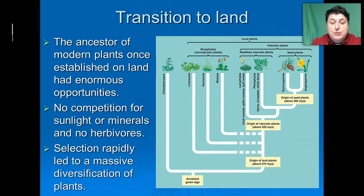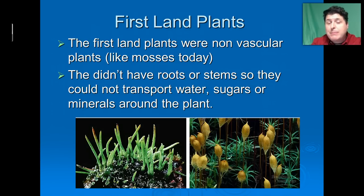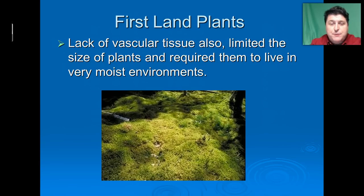When the ancestors of modern plants made it onto land about 475 million years ago, there were a lot of opportunities and they were able to diversify rapidly, leading to the formation of all of our modern lines of plants. Without any predators and with plenty of resources, the plants were able to really master land. The first land plants were probably much like our mosses today in that they're non-vascular — they didn't have roots and stems with specialized tubes to transport water great distances, which limited their size and required them to live in very moist environments.